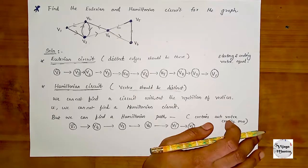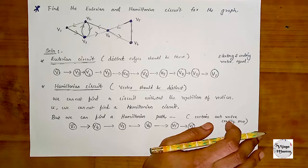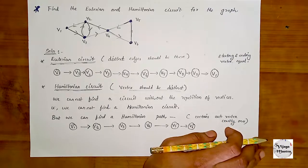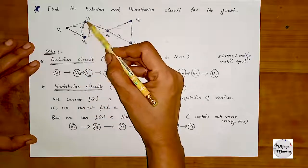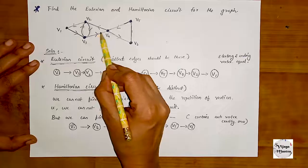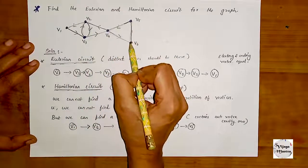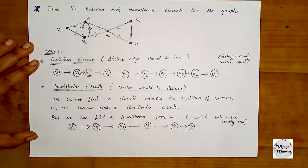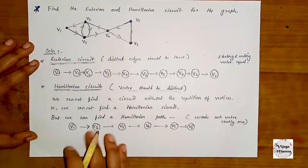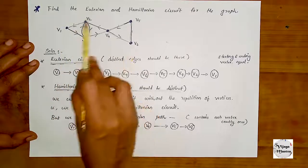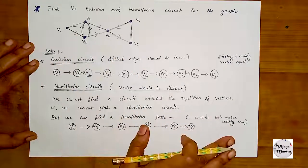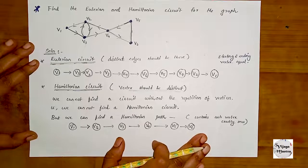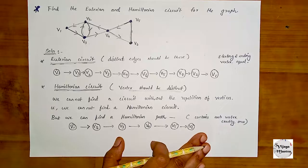So this graph does not have a Hamiltonian circuit. But if we look for a Hamiltonian path, we can find one: V1, V2, V3, V4, V5, V6 — visiting each vertex exactly once without returning to the start.